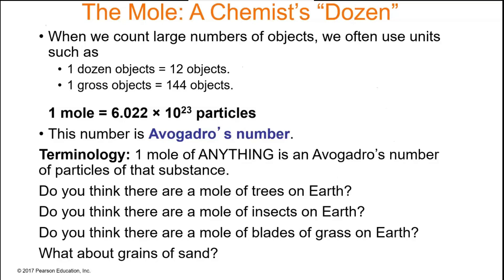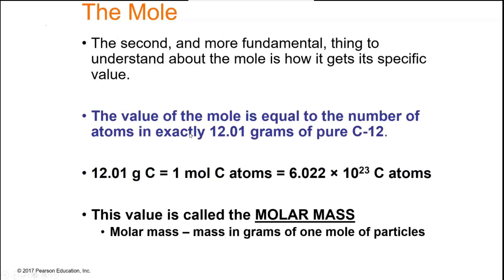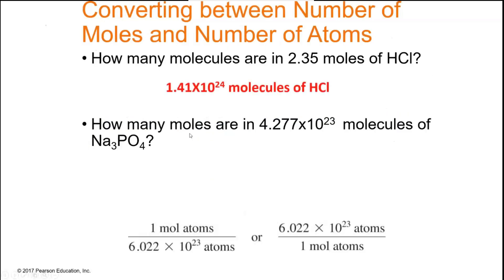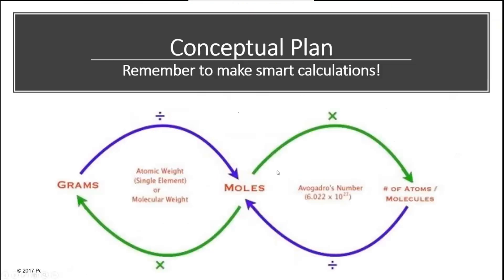Because atoms are so small, we use moles to make them tangible. One mole of carbon weighs 12.01 grams and can fit in your hand. One mole of phosphorus weighs about 35 grams; one mole of iron weighs about 55 grams. These values come from the average atomic mass on the periodic table. We can use Avogadro's number as a conversion factor: multiplying moles by Avogadro's number gives molecules; dividing molecules by Avogadro's number gives moles. The molar mass converts between grams and moles.